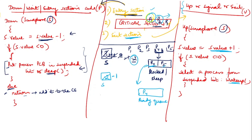Now suppose P2 also exits the critical section. It executes the up system call, incrementing the semaphore value to 0. Since 0 is less than or equal to 0, P5 is also woken up. Now both P4 and P5 are in the ready queue and can try entering the critical section by implementing the down system call. This is the main implementation of semaphores and how synchronization is achieved.